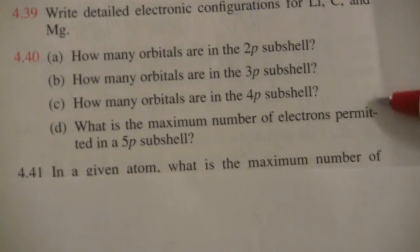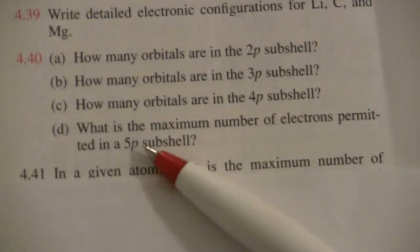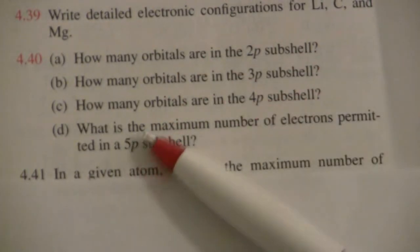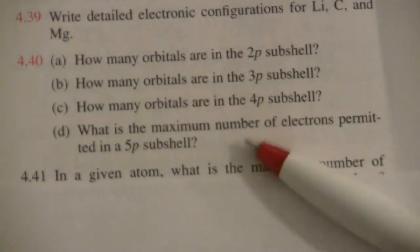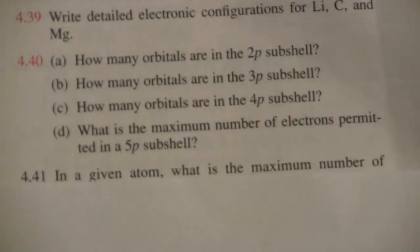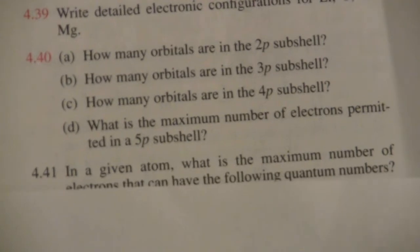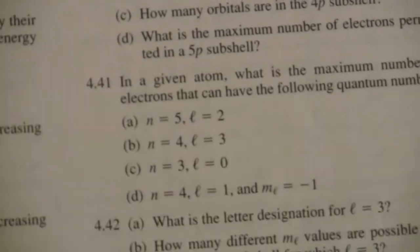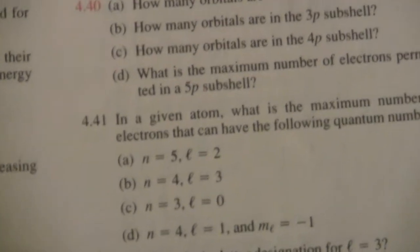And what is the maximum number of electrons permitted in a 5p subshell? Again, that same p subshell, so it has those three doors. In each door, in each room, there are two electrons. So there would be a total of six electrons that could be in the p-wing of any level.